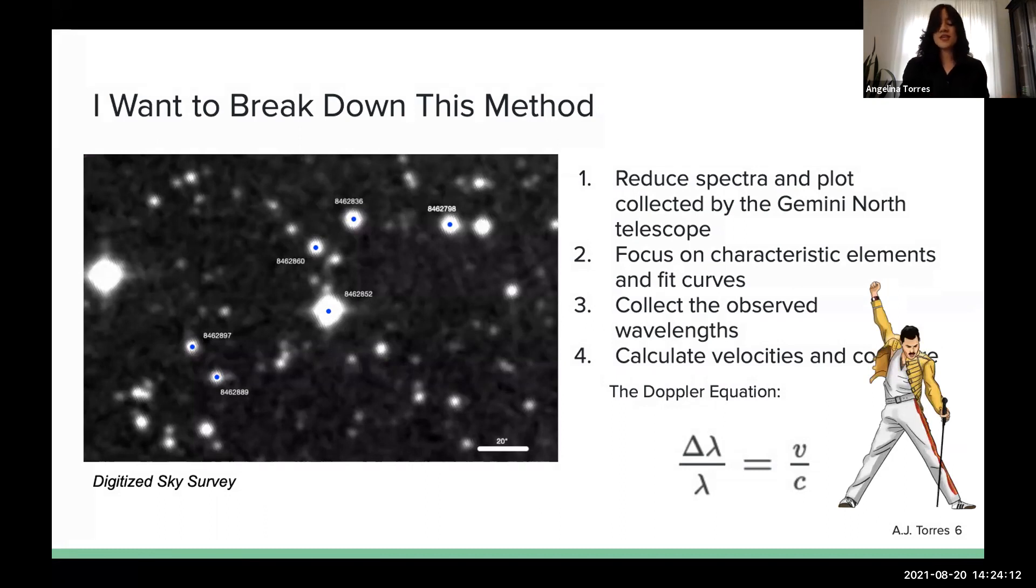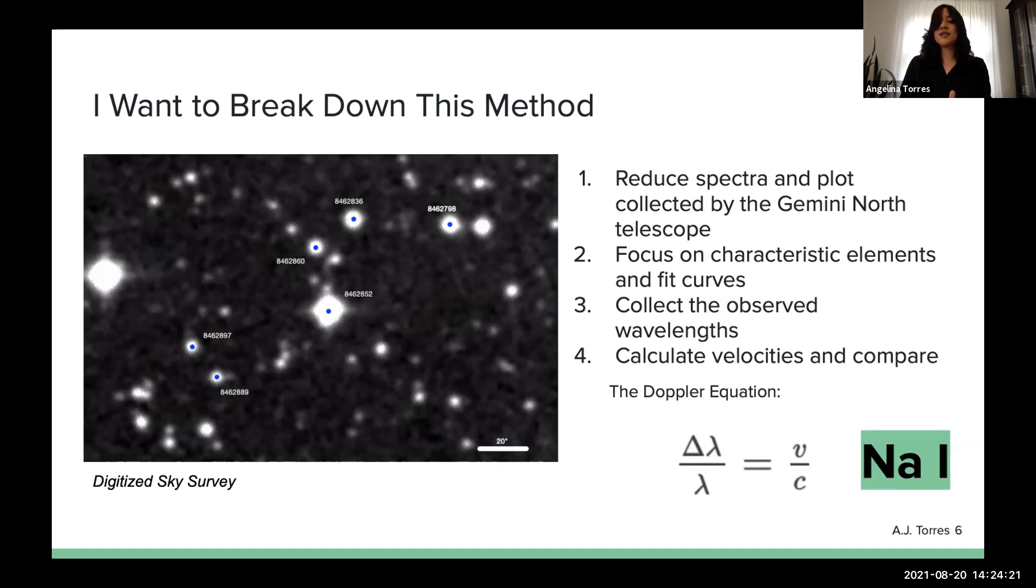We're not focusing on Mercury. Go away, Freddie. We're going to be focusing on sodium-1, which is characteristic to these clouds. We can fit models to the data that we've plotted and collect the observed rest wavelengths of sodium-1 in all of these clouds. From these observed wavelengths and the known rest wavelengths of sodium-1, we can use the Doppler equation to calculate the velocities of all of these clouds. From these velocities, we can draw our conclusions.